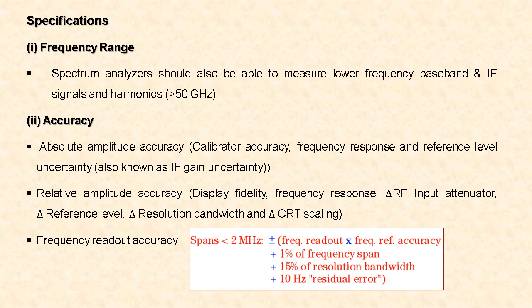Next, frequency response includes change in RF input attenuator, change in reference level, change in resolution bandwidth, and change in CRT scaling. For frequency readout accuracy, for a frequency span less than 2 MHz, it can be calculated using: ±(frequency readout × frequency reference accuracy + 1% of frequency span + 15% of resolution bandwidth + 10 Hz residual error).